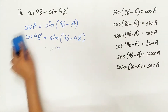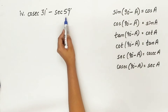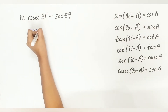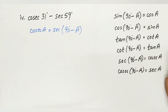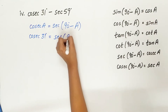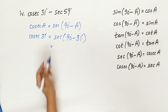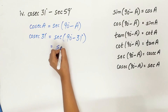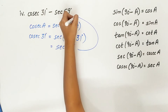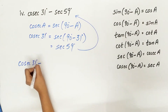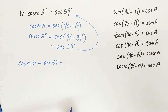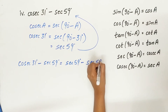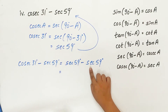For the fourth part, we have cosec 31 degree minus sec 59 degree. We know cosec A is equal to sec 90 degree minus A. A is 31 degree, so cosec 31 degree equals sec 90 degree minus 31 degree, which is sec 59 degree. Substituting, sec 59 degree minus sec 59 degree is 0.